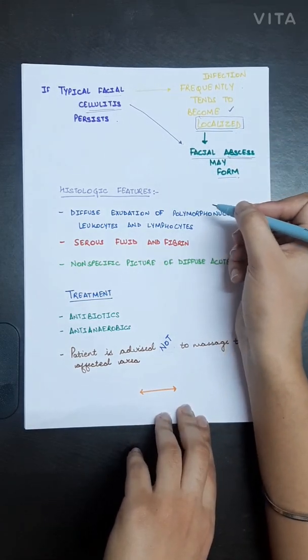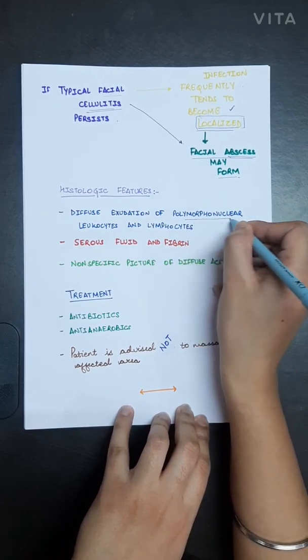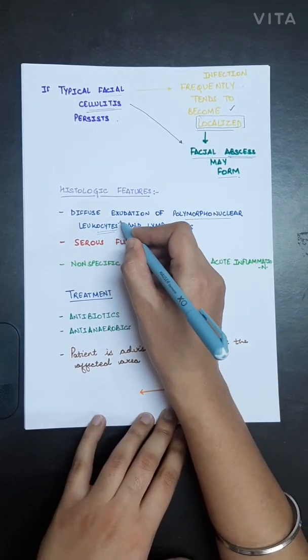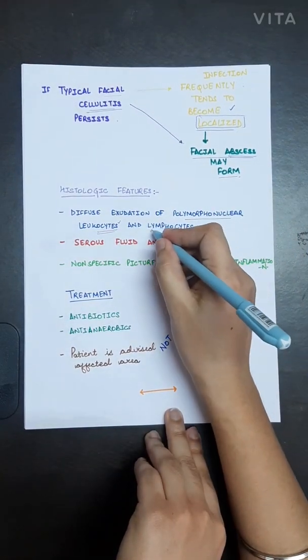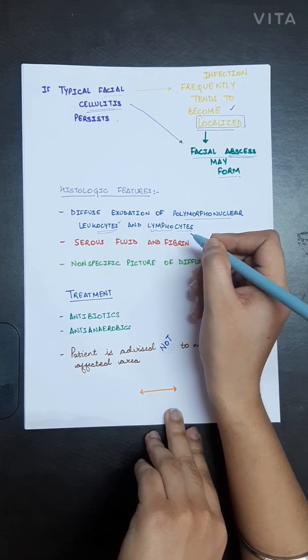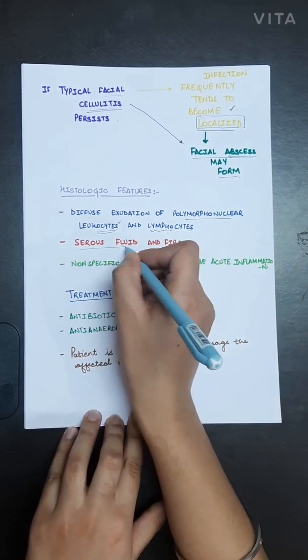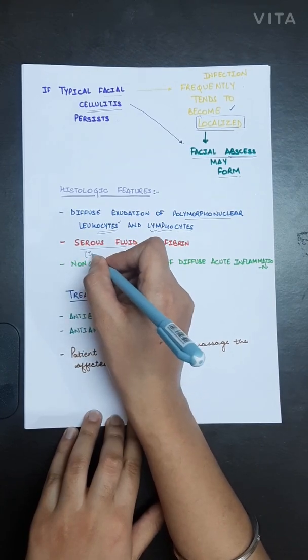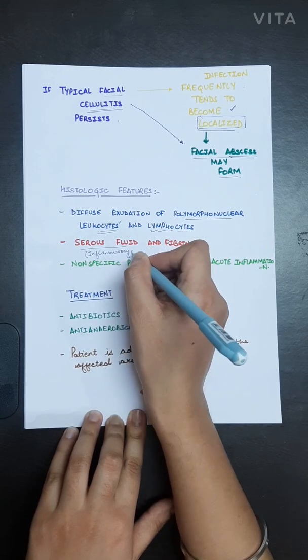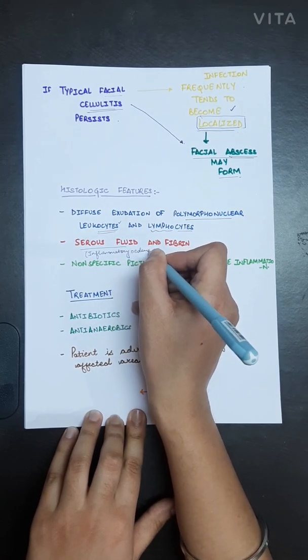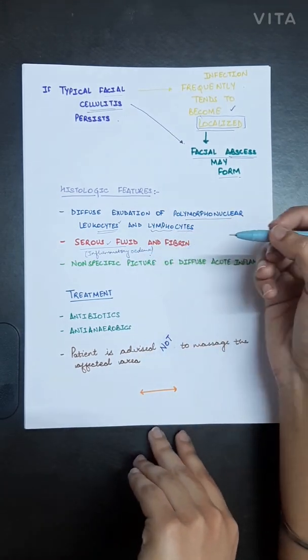The histological features of cellulitis include diffuse exudation of polymorphonuclear leukocytes, which are prominently seen. Very rarely lymphocytes are also seen. Serous fluid and fibrin are also seen - this is basically inflammatory edema. A non-specific picture of diffuse acute inflammation is seen in the histology.